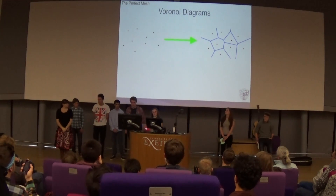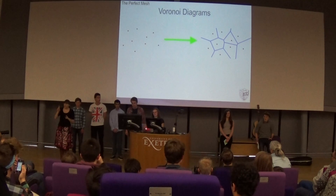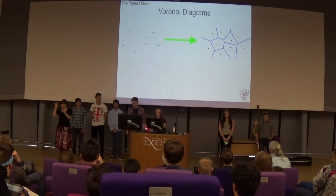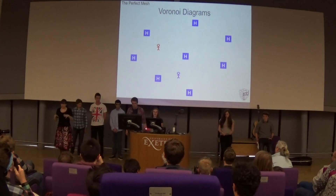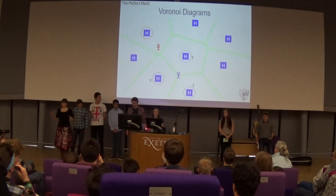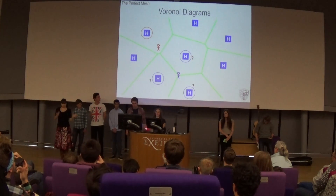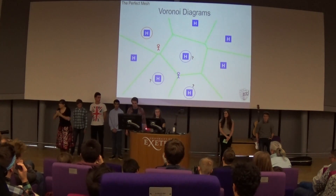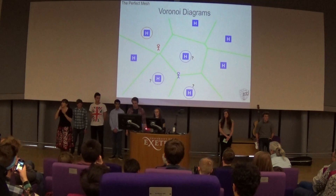A Voronoi diagram is another way of creating a mesh, and it's less uniform than what we've seen so far, but it's very good for real-life applications where you have certain sites that restrict how uniform your mesh can be. It makes it so that each cell contains one site, and any location within each cell is closer to that cell's site than any other. For example, sites could be hospitals, and people could want to know which hospital is closest to them. By adding a Voronoi diagram, you can see that the red person is closest to the hospital they share a cell with, and the purple person is at a vertex in the Voronoi diagram, meaning they are equidistant from the three hospitals surrounding that vertex.